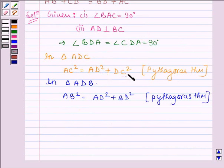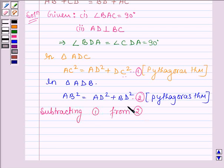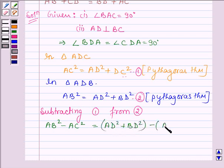Let us denote this by equation number 1 and this by equation number 2. Now, subtracting 1 from equation number 2 we have on the left hand side AB square minus AC square. On the right hand side we have AD square plus BD square minus AD square plus DC square.